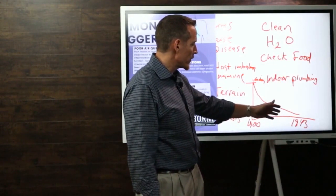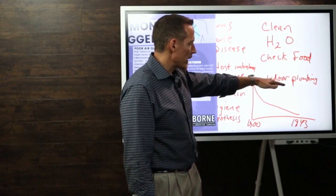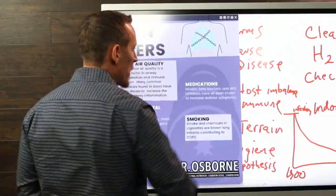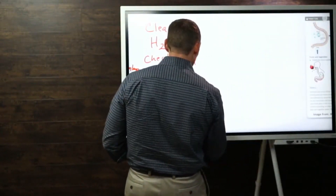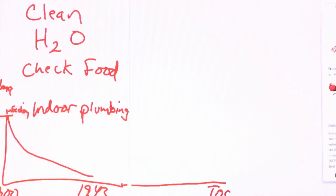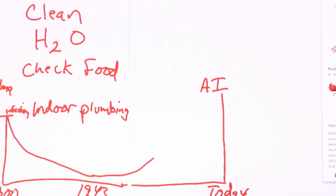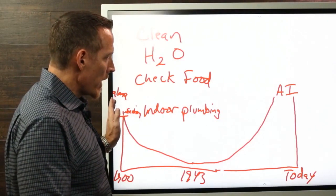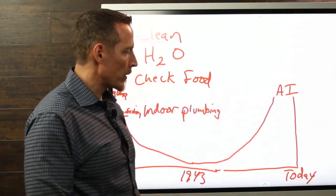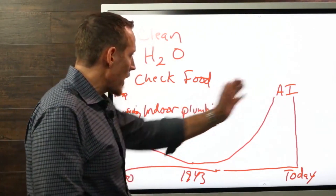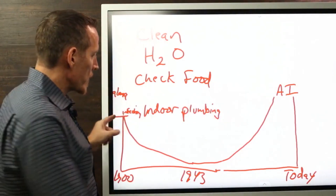And by the way, this decline happened before the first vaccine — so while many give vaccines credit for the demise of infectious disease, it was actually hygiene and plumbing. But here's what we've also seen: as we follow this curve to today, autoimmune diseases have done the inverse — rising sharply. There's an inverse correlation between being too clean and autoimmune disease. It's not just being too clean; it's being too clean while also being exposed to an array of chemicals, processed food, and multitudes of dietary chemicals.